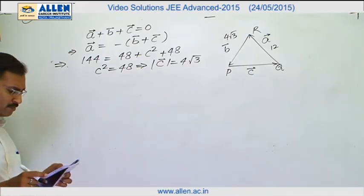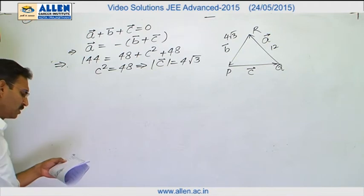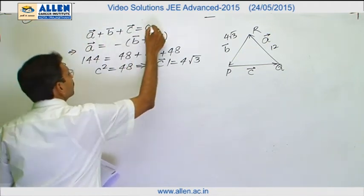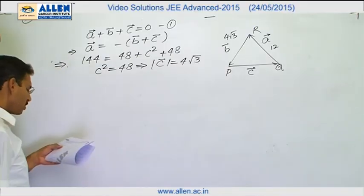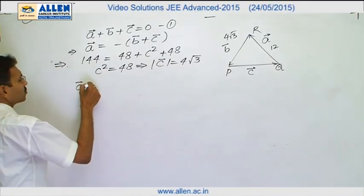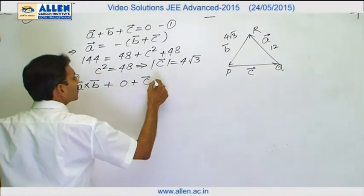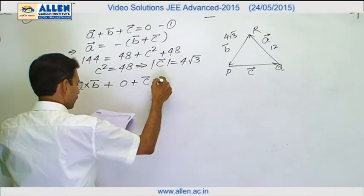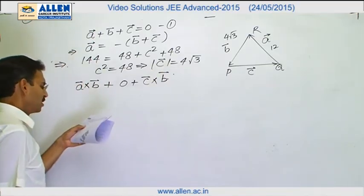Now we can verify option a and b using this. Also for option c, we have this relation a plus b plus c equals to null vector. We will take cross product of b with this relation a cross b plus b cross b is null vector plus c cross b, c cross b.